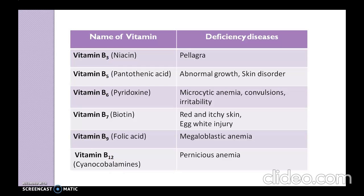Vitamin B7, known as biotin, causes red and itchy skin, and there is also an egg white injury — meaning consumption of raw eggs leads to this deficiency of biotin. Vitamin B9, which is folic acid, produces megaloblastic anemia, which means there is an increase in the size of RBCs.